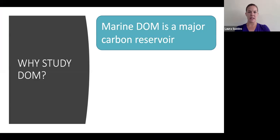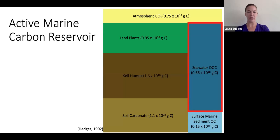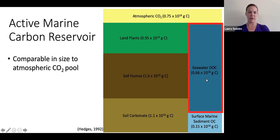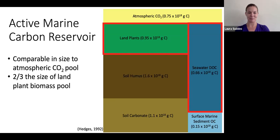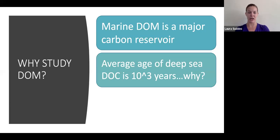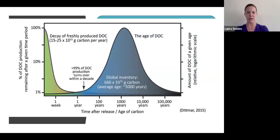Marine DOM is a major carbon reservoir, but little is known about the mechanisms that control it or how it might react to changing environmental conditions. The active marine carbon reservoir contains 0.66 × 10¹⁸ grams of carbon — comparable in size to the pool of atmospheric CO₂ and two-thirds the size of the pool of land plant biomass. Second, the average age of deep sea DOC is on the order of thousands of years, which is surprising because more than 99% of freshly produced DOC is remineralized within a decade.